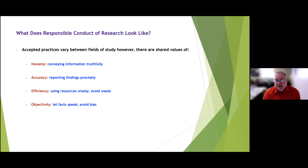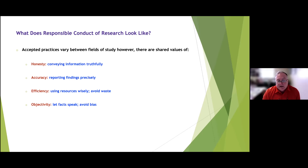Responsible conduct of research depends on the field of study, but all fields share values: honesty, accuracy, efficiency, and objectivity. Honesty and accuracy are critical — you must convey and report research results truthfully and precisely. Efficiency has become increasingly important as research funding has declined. Objectivity is perhaps most important: you have to let the facts speak for themselves and avoid personal biases when doing and reporting research.